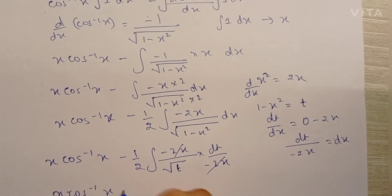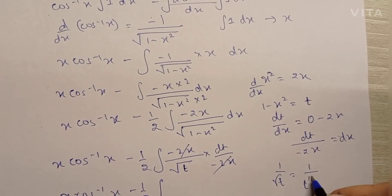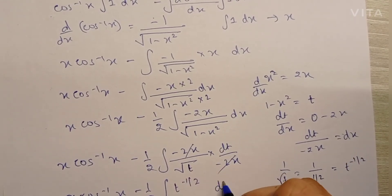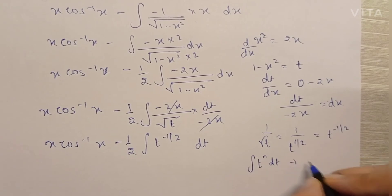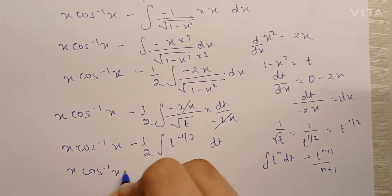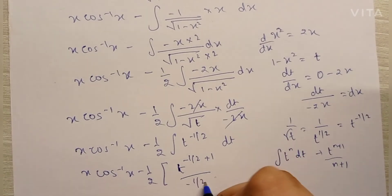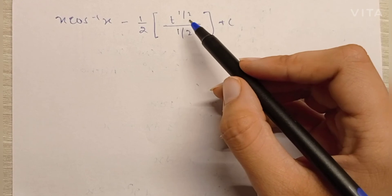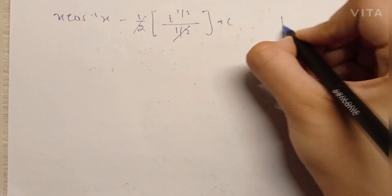So we have x cos inverse x minus 1 by 2, times the integral of 1 upon root t, which is t raised to minus one half. Now we know that the integration of t raised to n is t raised to n plus 1 upon n plus 1. So the integration of t raised to minus one half gives t raised to minus one half plus 1, upon minus one half plus 1, which simplifies to t raised to one half upon one half — the halves cancel, giving us root t.